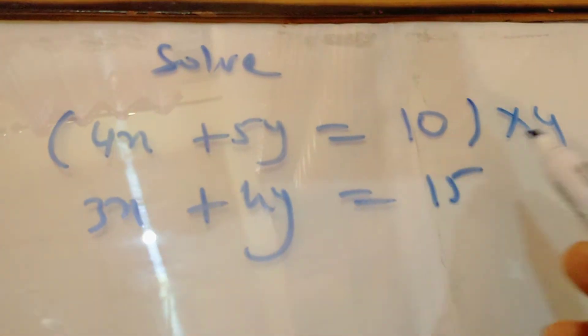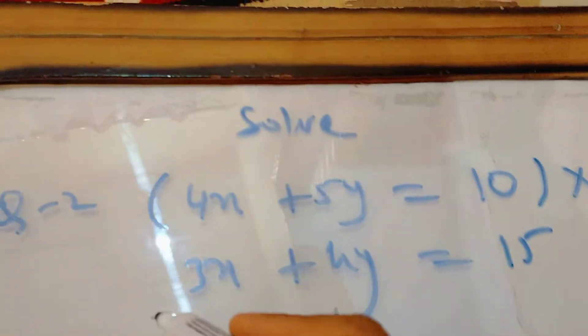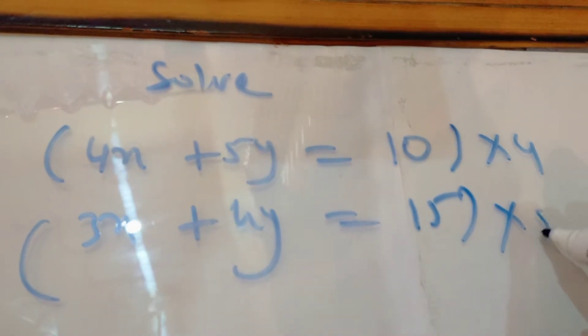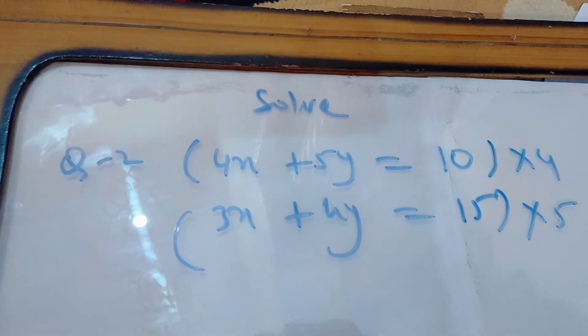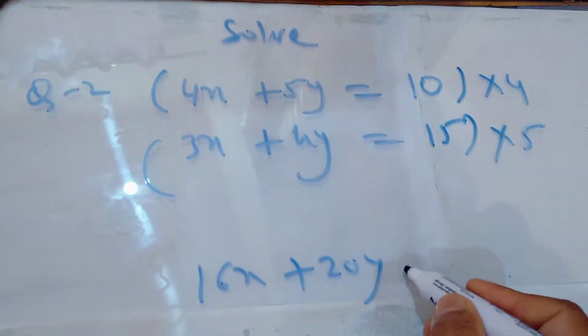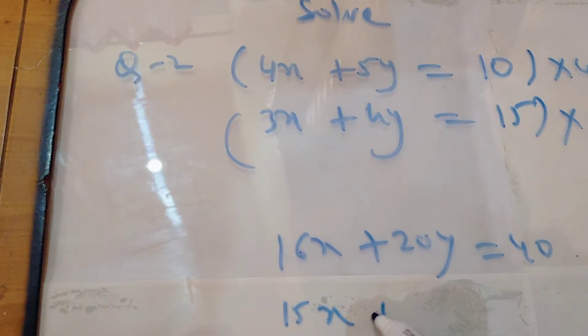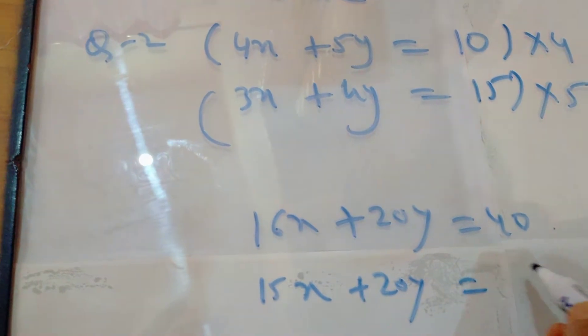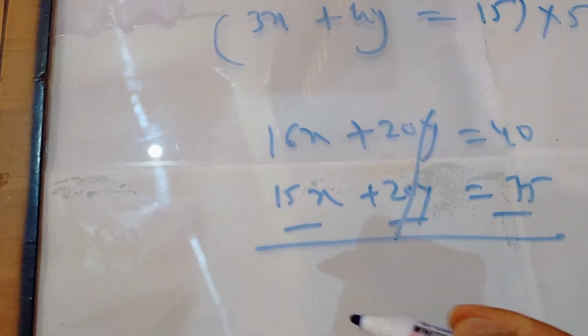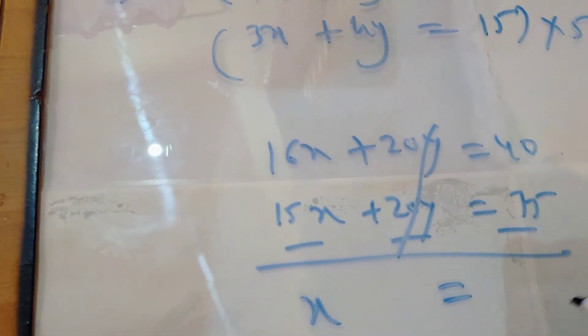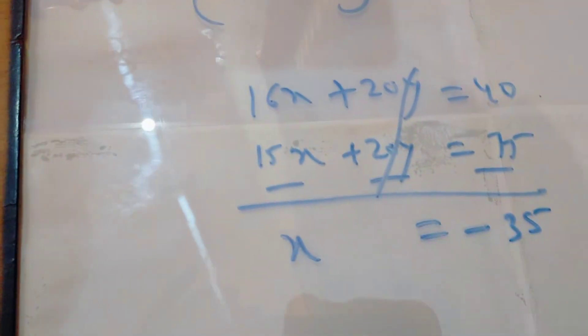This coefficient 5 and 4, so here I should multiply by 4 because 4 times 5 is 20. And here if I multiply by 5 it will be 20. So the second equation I am going to multiply by 5. So equation 1 will give the result 16x plus 20y equals 40, and here 15x plus 20y equals 75. Now after that, minus minus minus, it is canceled out. So it is x equals minus 35.